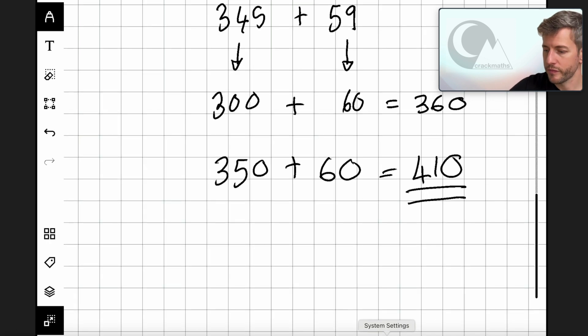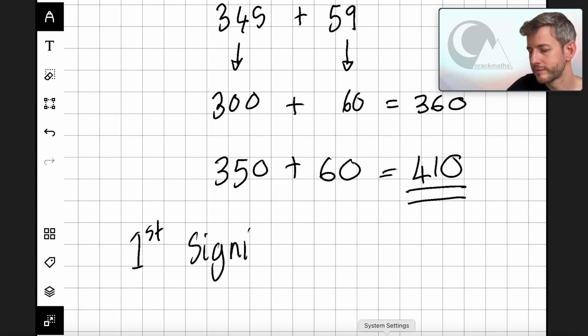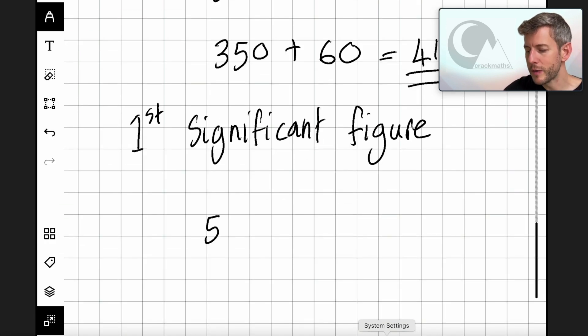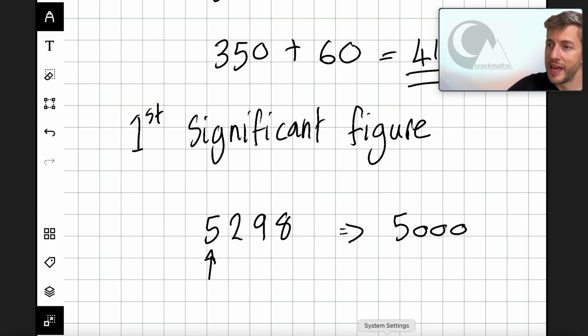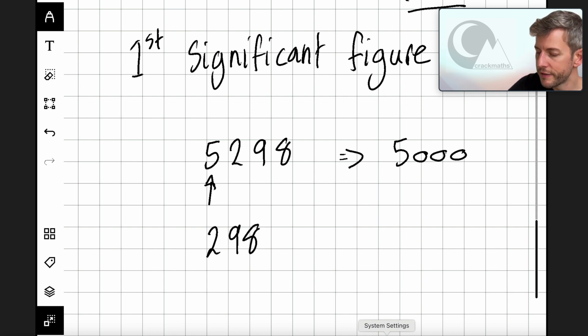So we call this number the first significant figure. The first significant figure is the first number in a number that tells us something about that number. For example, in 5298, the first significant figure is the 5 because that tells us that this number is roughly 5000.